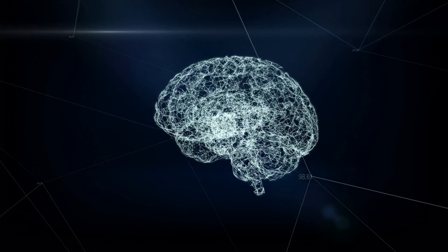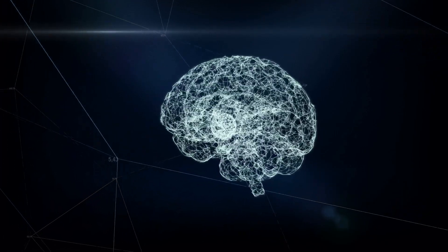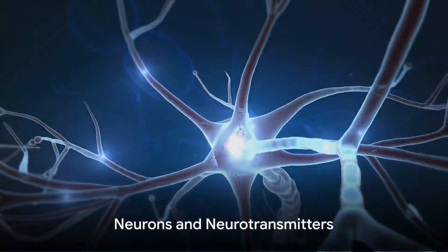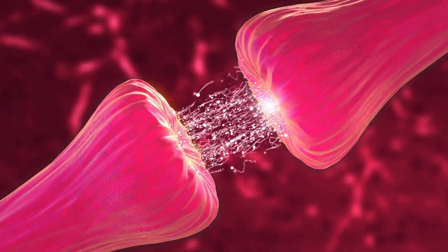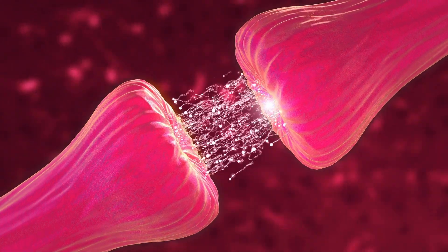Without neurotransmitters, the brain's communication network would grind to a halt. Neurons, the building blocks of the brain, communicate using these chemical messengers. But what exactly are these neurons?